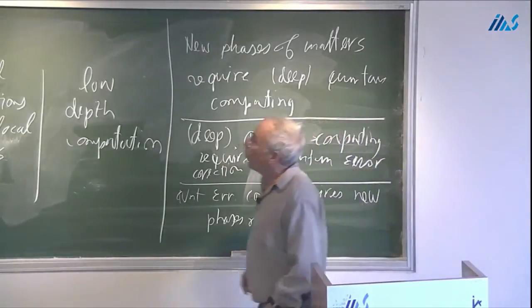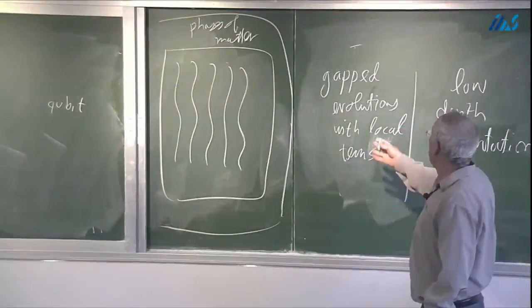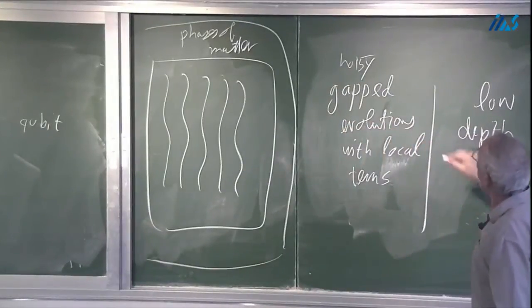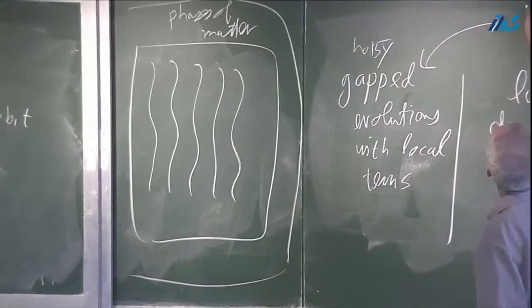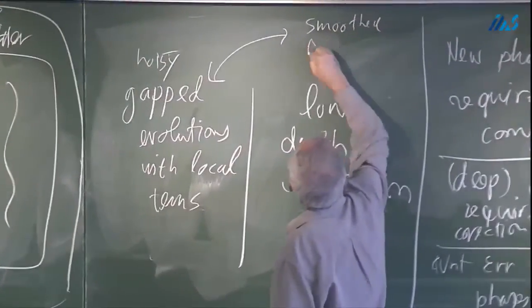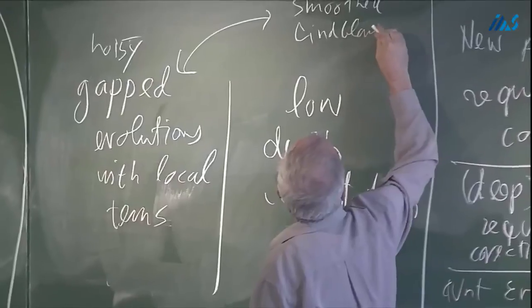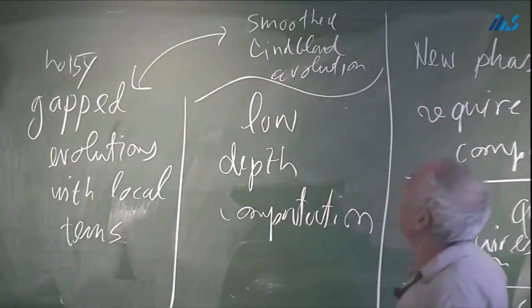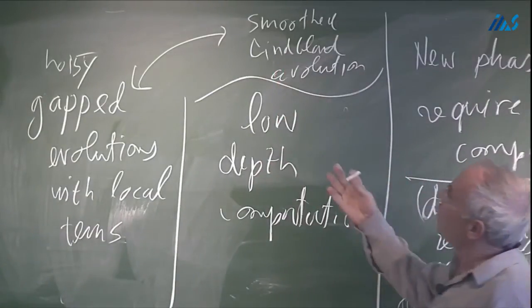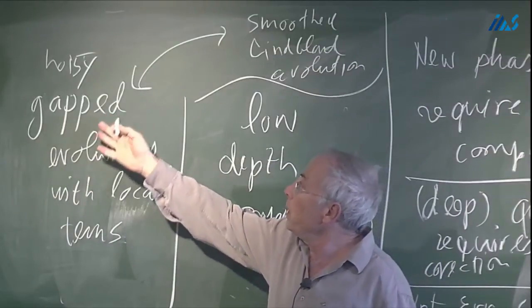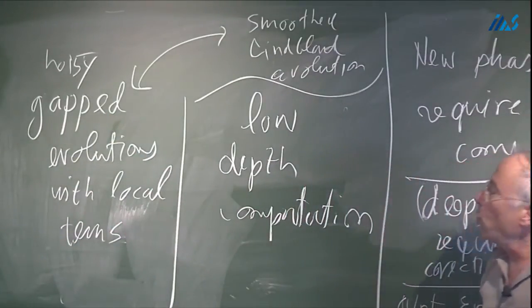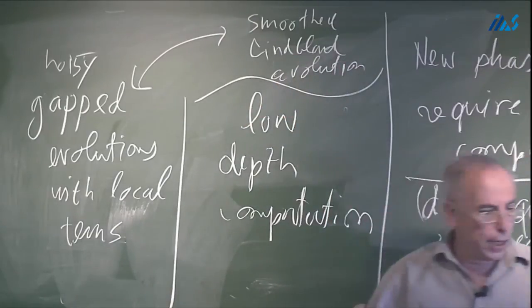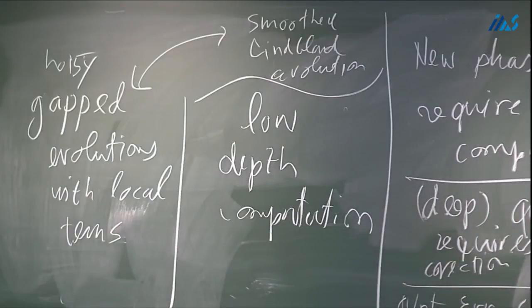Is to relate this gapped evolution with local terms, or noisy gapped evolution with local terms, to how do they relate with my model of smoothed Lindblad evolution? So the smooth Lindblad evolution are non-geometric models, they are abstract models, and it will be interesting to see if gapped, noisy gapped evolution with local terms can be described by smooth Lindblad evolution, what is the smoothing law, and so on.